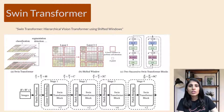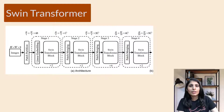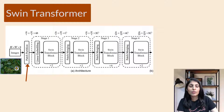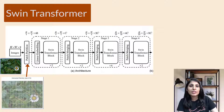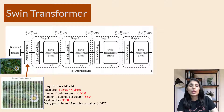Let's start with the architecture of the Swin Transformer. The first step is patchification, where the input image is divided into patches. For example, if the input image size is 224×224 and the patch size is 4×4, we will have a total of 3136 patches — 56 patches per row and 56 patches per column.